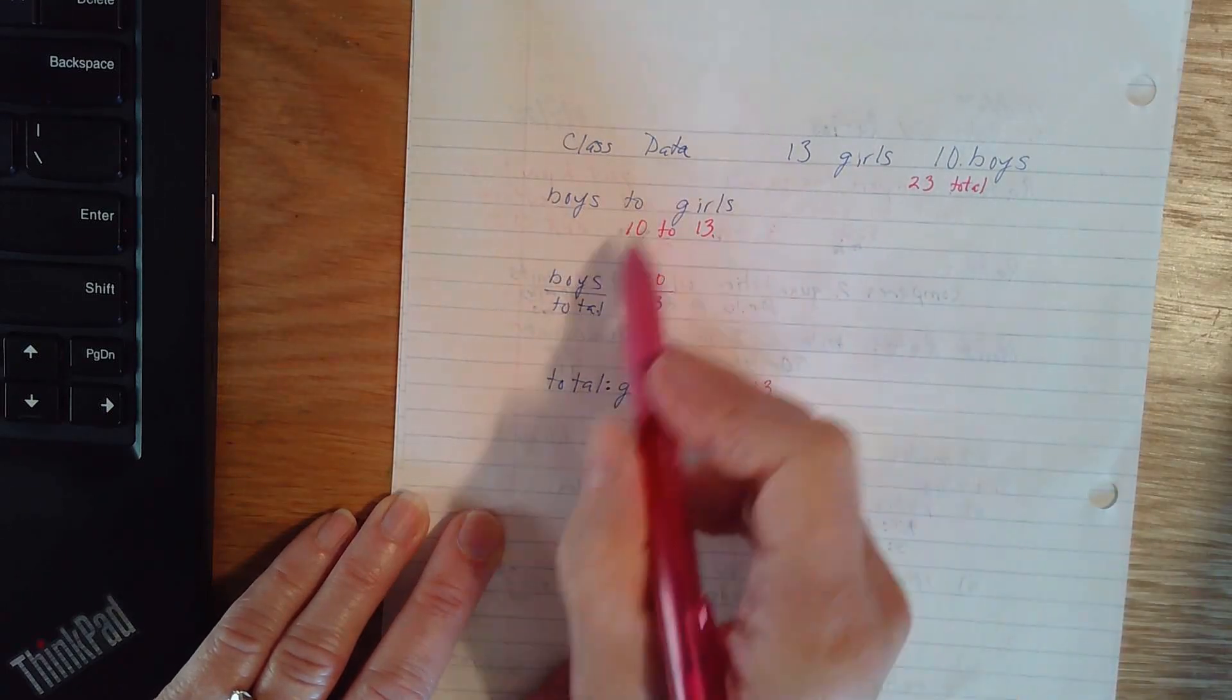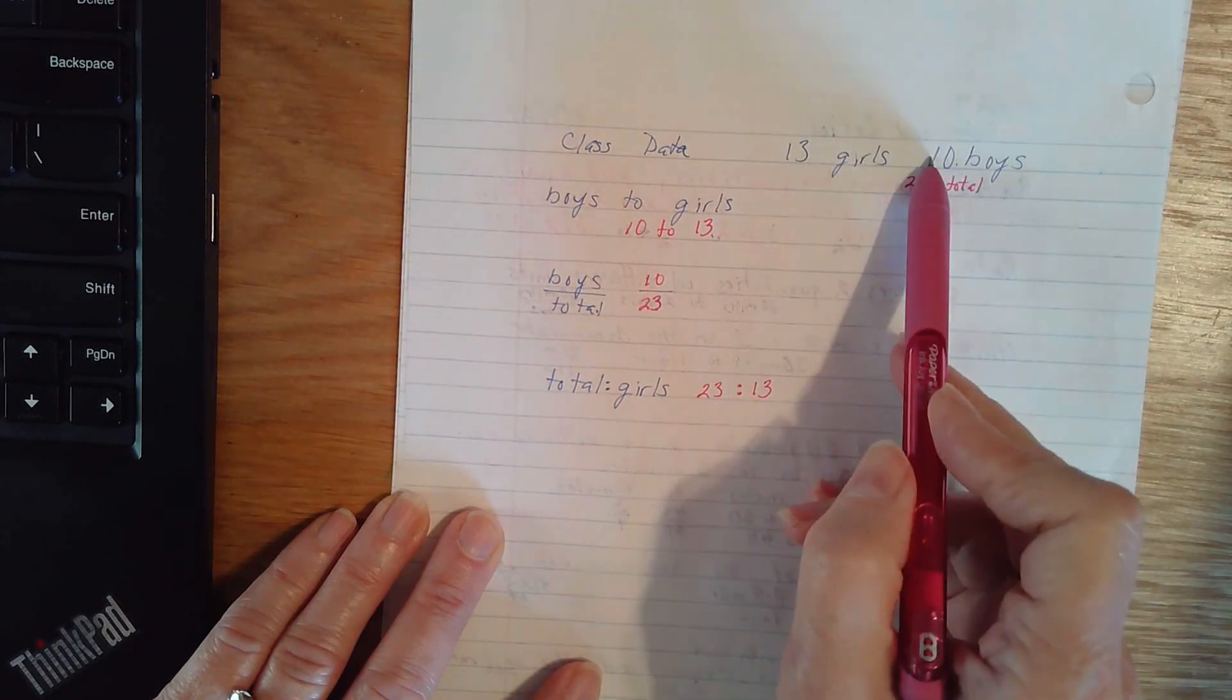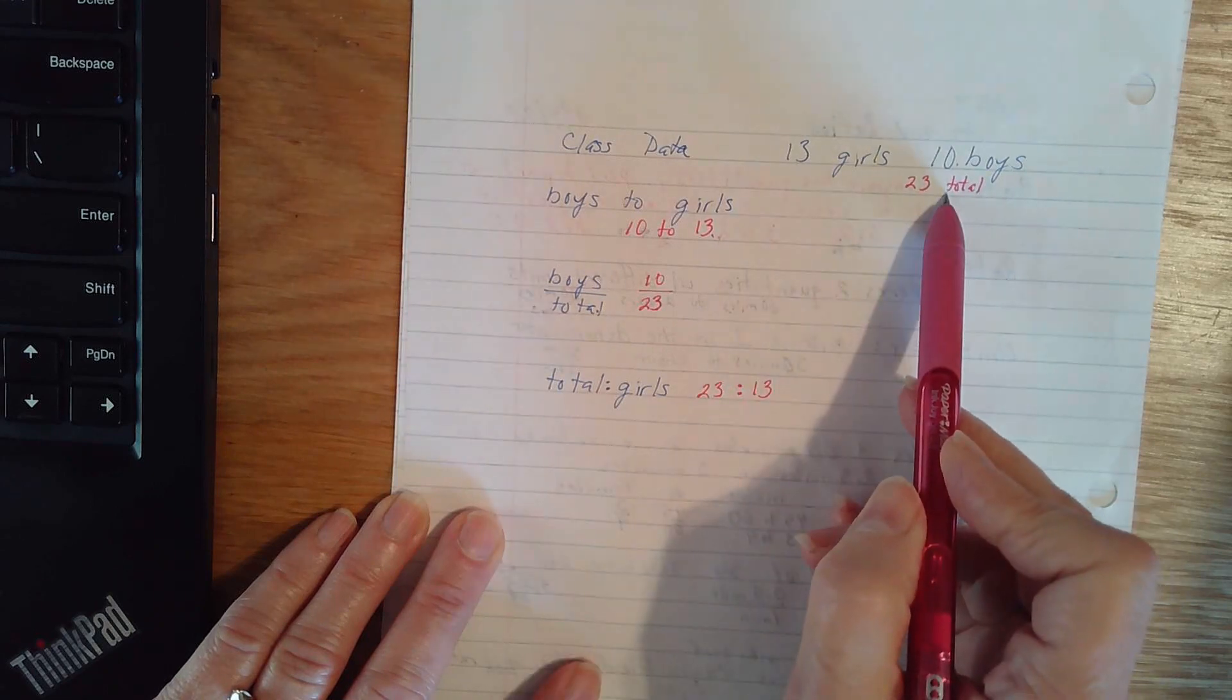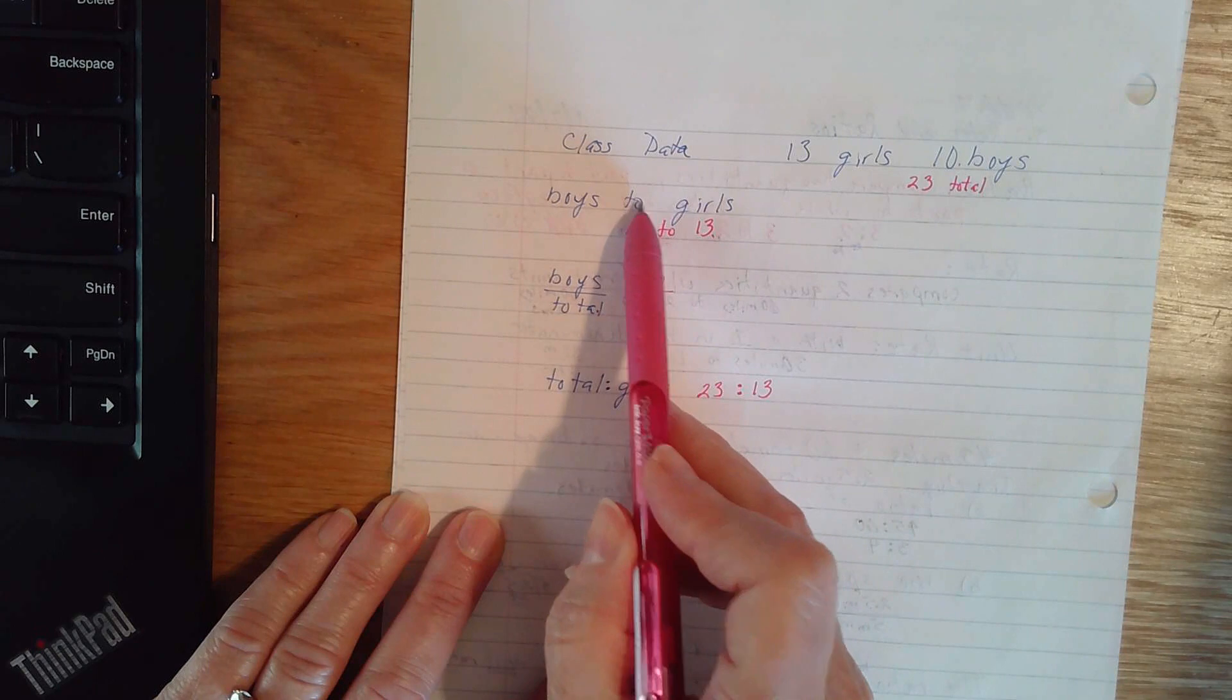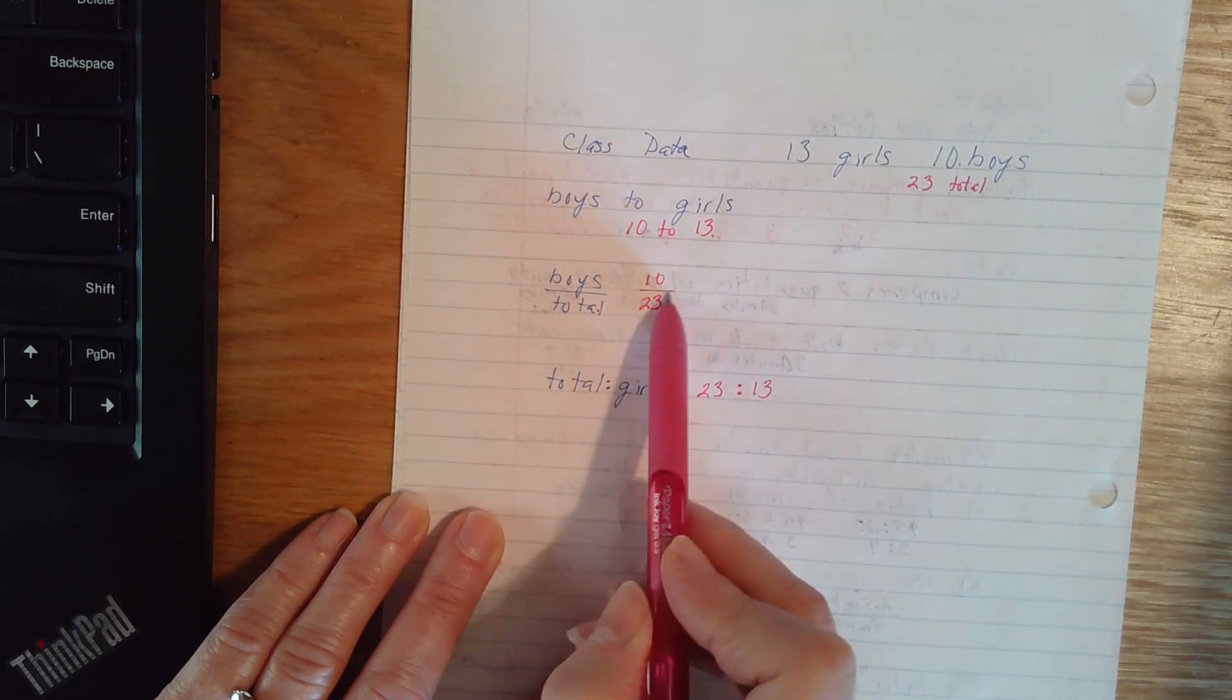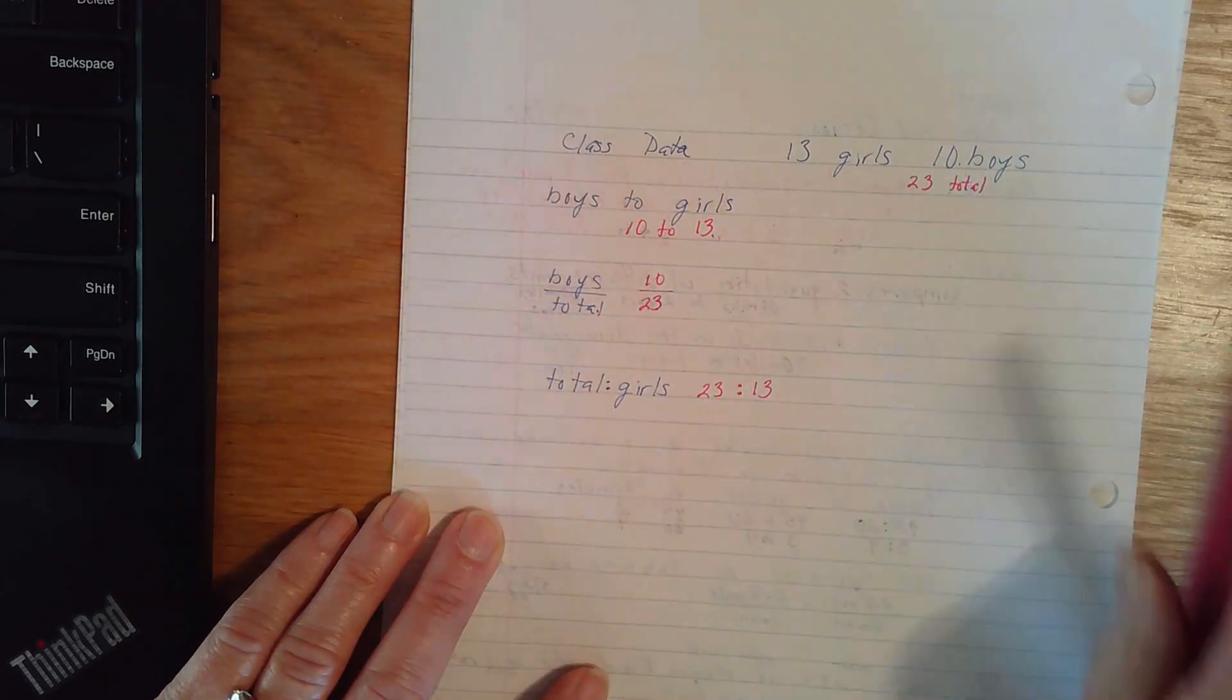Now, I could actually write, this is a total of, from literally two data points. I'm comparing girls to boys. I found a total. I could write it with the word to, with a 2 as a fraction bar and 2 as a colon.